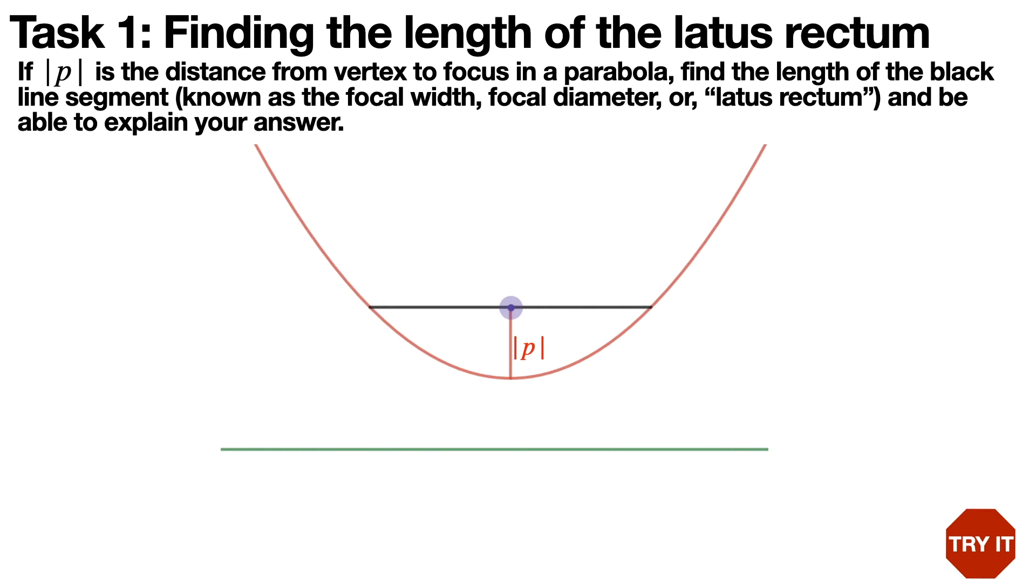So I'm just going to start off by asking you a question, which is to find the length of the latus rectum, that is the length of that black line that's on the screen. If the absolute value of p is the distance from the vertex to the focus of a parabola, and we labeled that distance on the picture, find the length of the black line segment and be able to explain how you know your answer. Try it. Really just think about how long is that black line in terms of p.